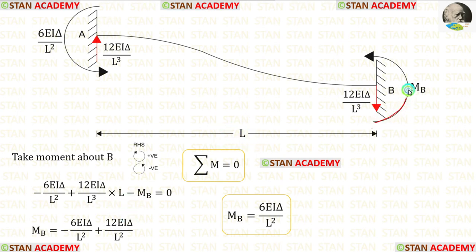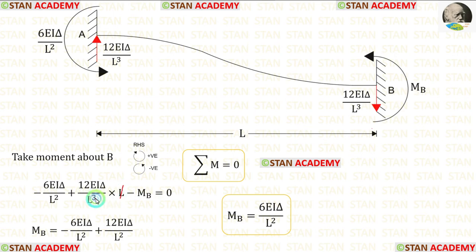MB is acting in the anticlockwise direction. So, it will be negative. We can eliminate L — here it will be square. Then, let us take minus MB to the other side — it will be positive.